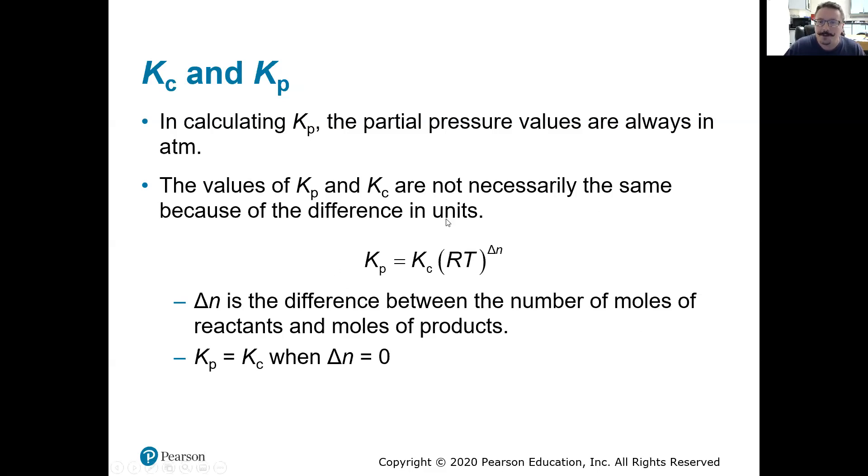Via this equation right here, which is K sub P equals K sub C times R times T raised to the change in N or the delta N. So R now is our ideal gas constant again, but since we're talking about pressure, we have to use the ideal gas constant with pressure units, 0.08206. And our temperature is going to be in Kelvin because our ideal gas constant temperature units are in Kelvin. So make sure you're using the right R, make sure you convert your temperature to Kelvin.